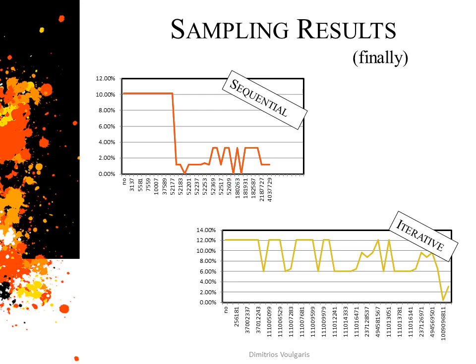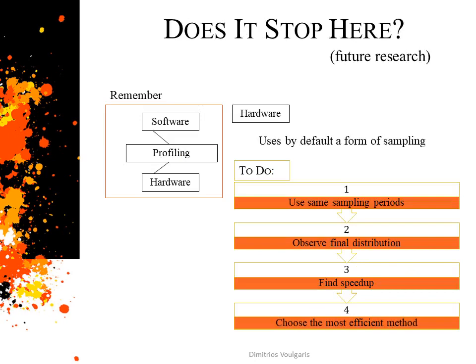To sum it up, I would like to emphasize that our sampling mechanism aims at enabling the comparison between the software and hardware approaches. Since, by default, hardware profiling entails a form of sampling, we have provided a chance of imitating this behavior through a software technique. This way, we can investigate whether these two sides of the same coin are actually identical or completely different, and whether we can get similar speedup by employing different approaches.